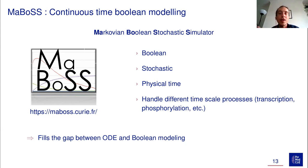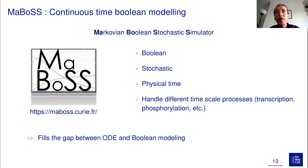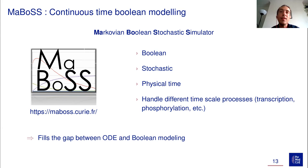Since MaBoSS has physical time, we have a real notion of time in our simulations that can be mapped to experiments or other models that also use physical time. There are kinetic parameters that allow handling of different time-scale processes. For example, phosphorylation happens quickly while transcription takes more time, and we can set kinetic rates to say a node will be activated quickly for phosphorylation or slowly for transcription. MaBoSS fills the gap between ODEs and Boolean modeling, combining simple Boolean formulas with precision and physical time.